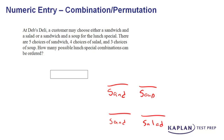For the individual choices, there are five options for sandwiches and three for soups. To find the total number of options of sandwiches and soups, you multiply the individual options together. In this case, five times three gives us fifteen options for the sandwich and soup lunch combination.